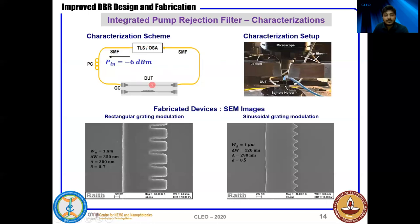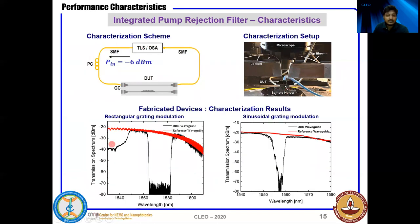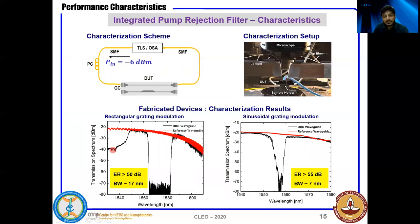For characterization, we fabricated a long straight waveguide alongside the DBR to see the wavelength dependency of the grating coupler, which is optimized at approximately 10 degree angle for TE polarization. These are the transmission characteristics for two different gratings for a minus 6 dBm input power launched from a tunable laser source. For rectangular modulation, the extinction ratio is greater than 50 dB but the bandwidth is quite large at around 70 nanometers. For sinusoidal grating, the stop-band bandwidth is around 7 nanometers and the extinction ratio is greater than 55 dB. For both gratings, the insertion loss is within 1 dB.